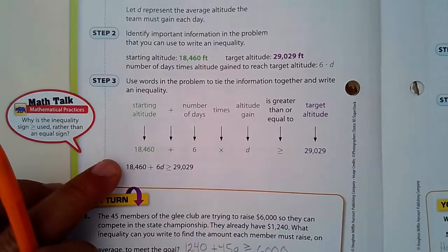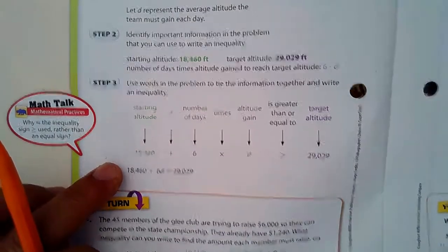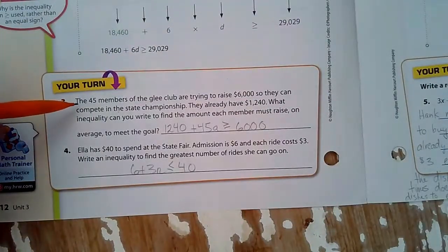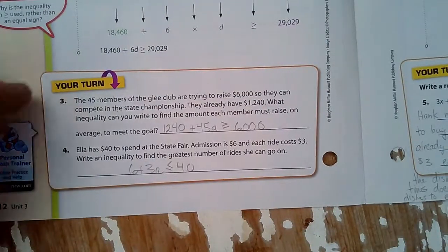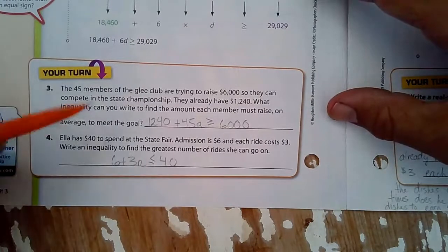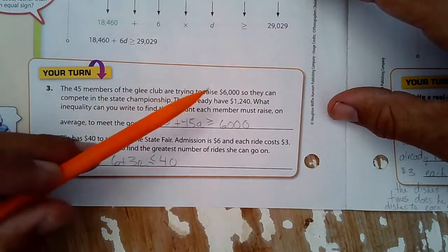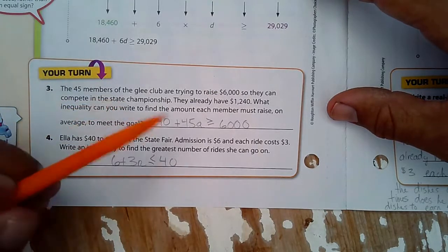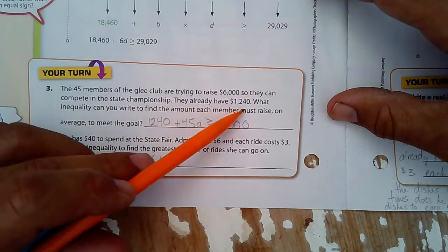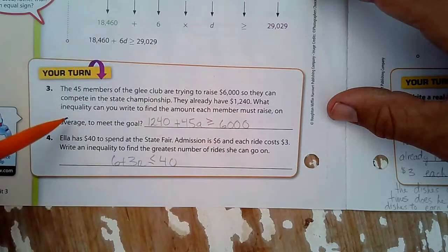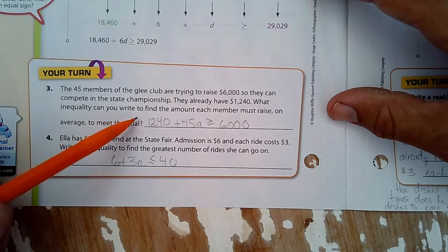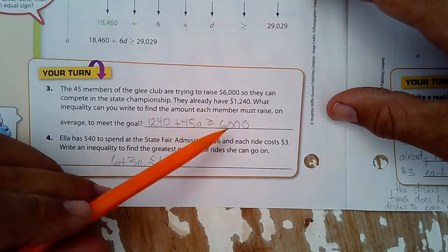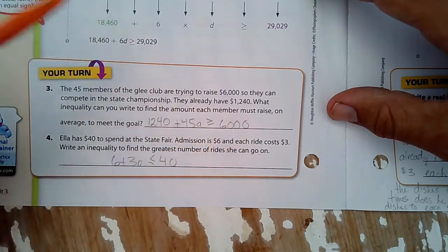And all we're doing is we're writing the inequalities. We're not solving them at this point. So here, the 45 members of the Glee Club, the singing club, are trying to raise $6,000 so they can compete in the state championship. They already have $1,240.